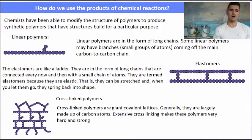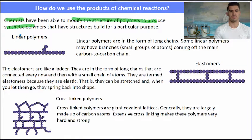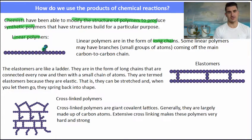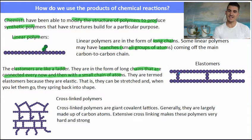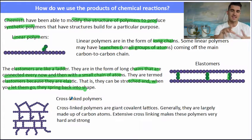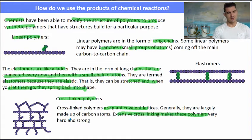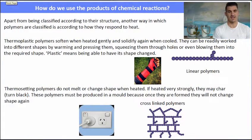Chemists have been able to modify the structures of these polymers to produce very different types of materials with a specific purpose. A linear polymer is essentially just a long backbone of carbons with small atoms or small groups of atoms coming off the main chain. An elastomer has covalent bonds connecting two chains at different regions — these are called elastomers because they are elastic. When you stretch them, they store the energy and snap back into shape due to those cross-links. An extensively cross-linked polymer has many cross-links, which provides a lot of strength.